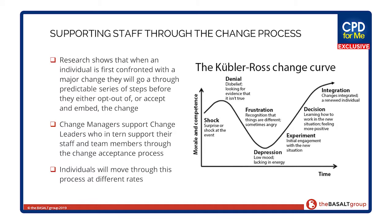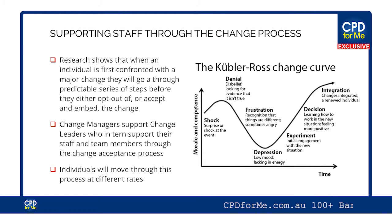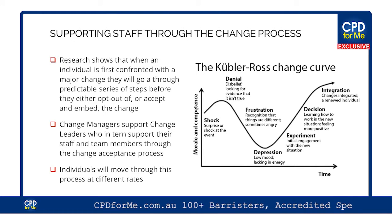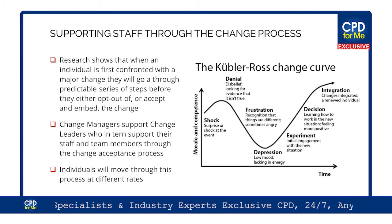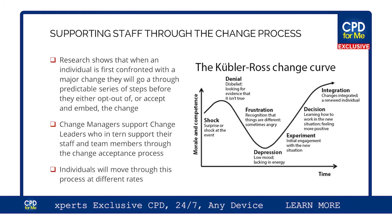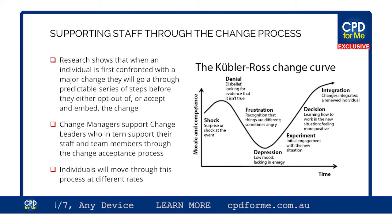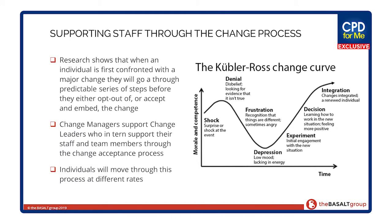Kubler-Ross have done some really interesting research and developed some models. You may have heard of them as the drivers of a grief model — the five stages of grief, recently upgraded to seven stages. Sometimes people are so attached to the current state that they need to go through a grieving process to get to the future state. Kubler-Ross have come up with a change curve that is widely used in the change industry.